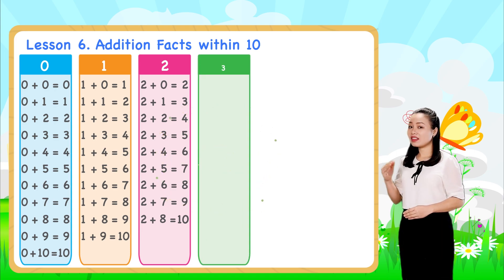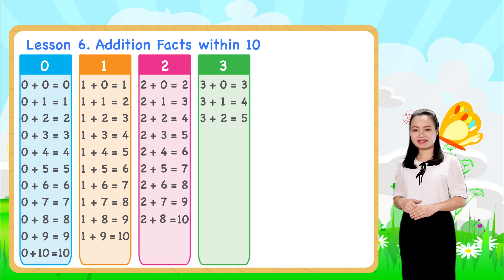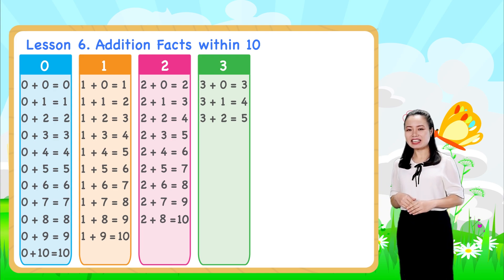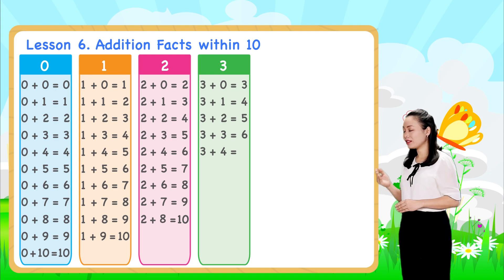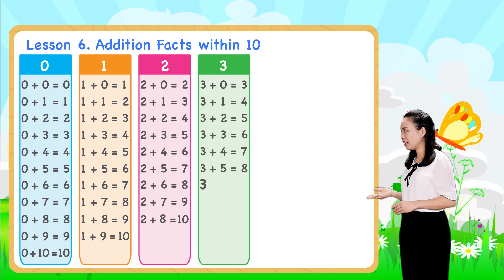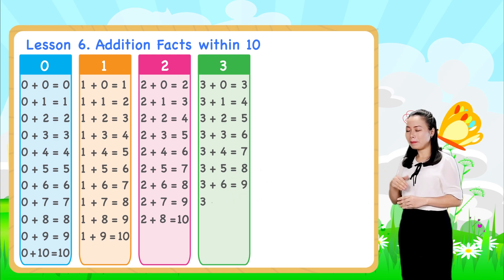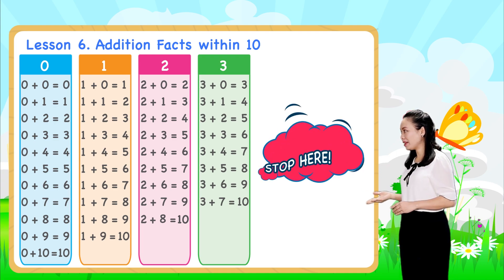Next, look at the threes table. We already learned these addition facts. Let's continue. Three plus three equals six. Three plus four equals seven. Three plus five equals eight. Three plus six equals nine. Three plus seven equals ten. We'll stop here for now.